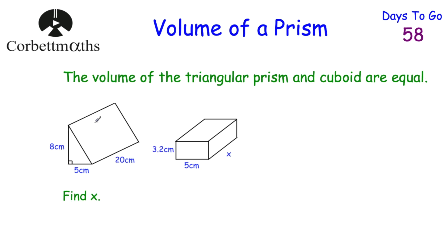Our next question: we've got a triangular prism and a cuboid. We're told their volumes are equal. Find x, the length of the cuboid. The first thing to do is work out the volume of the triangular prism. The cross-section is a triangle, so we find the area: half the base times the height. That's 5 times 8 equals 40, and half of 40 is 20 centimetres squared.